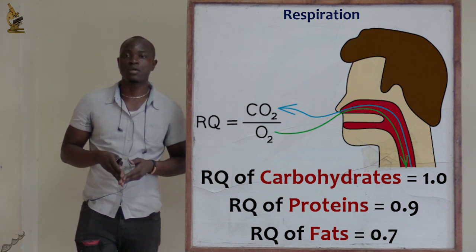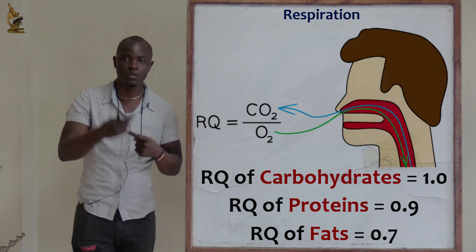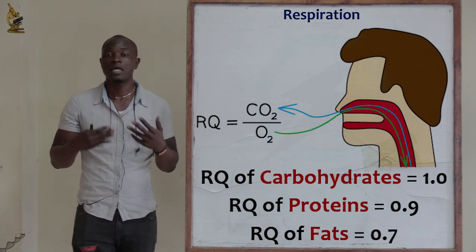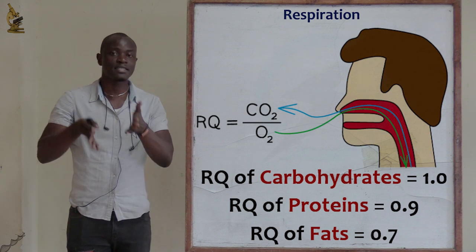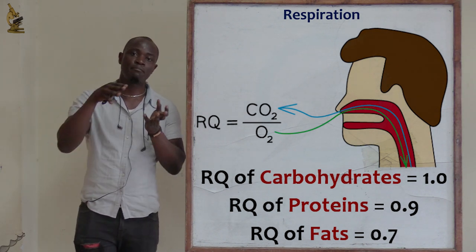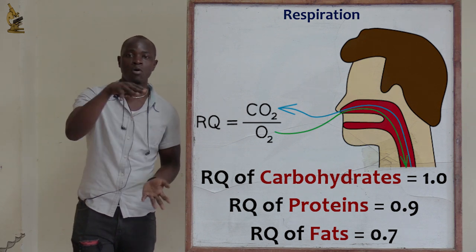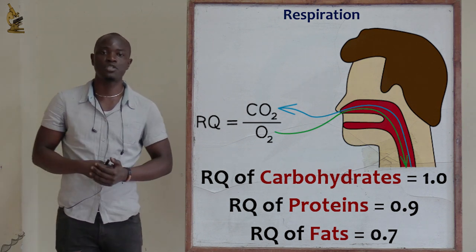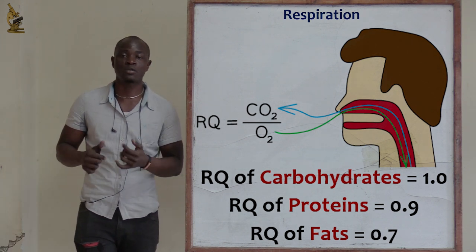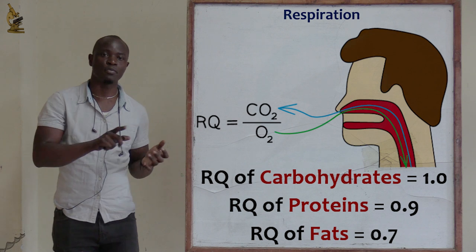The RQ values for fats and proteins are less than 1 because the carbon dioxide being produced is less than the oxygen being consumed — the oxygen used up is more than the carbon dioxide produced. That is why the respiratory quotient values are 0.7 and 0.9 respectively.